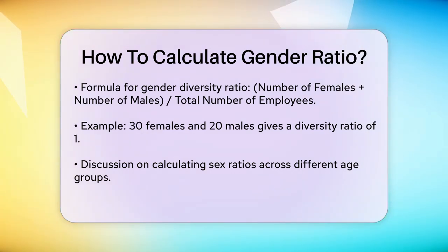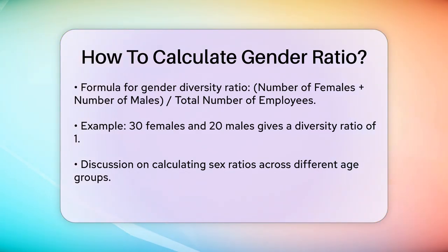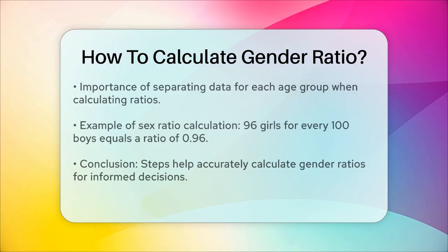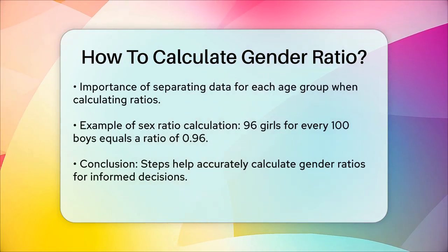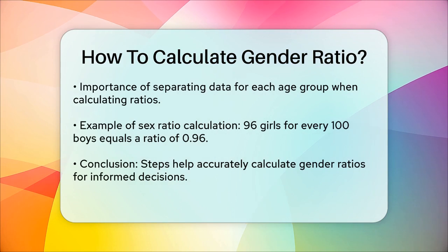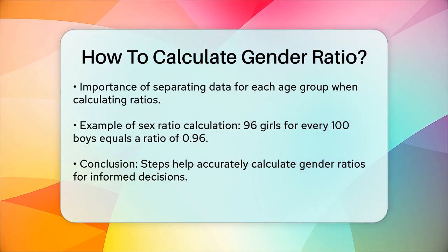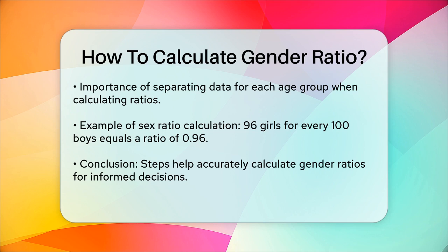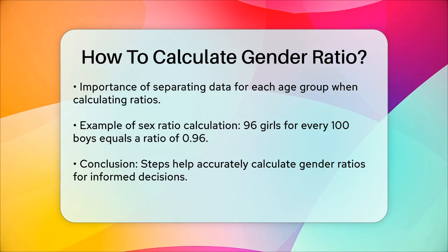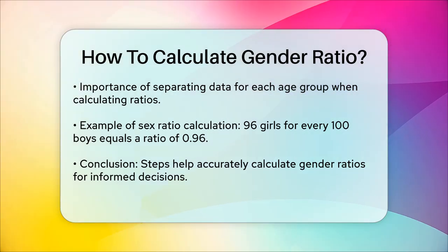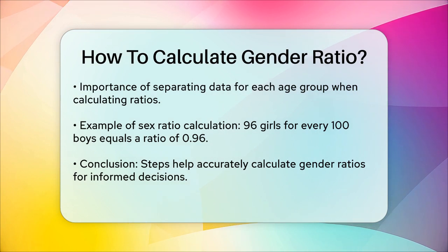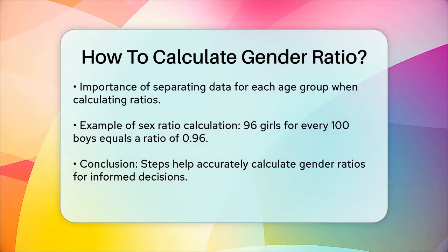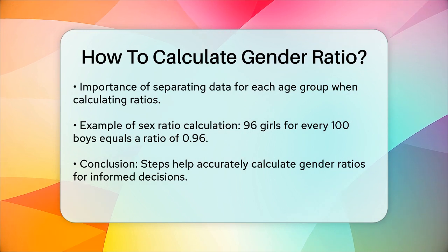To calculate the sex ratio for a specific age group, you divide the number of females by the number of males for that age group. This gives you a ratio that shows whether there are more females or males in that age group. For example, if there are 96 girls for every 100 boys in a certain age group, the sex ratio = 96 / 100 = 0.96. This means there are fewer girls than boys in that age group.